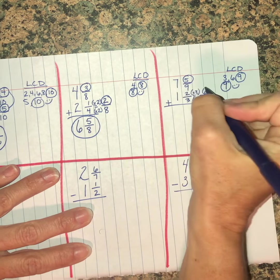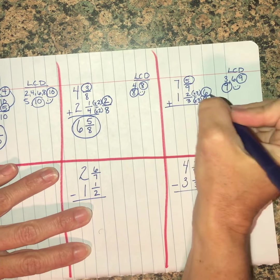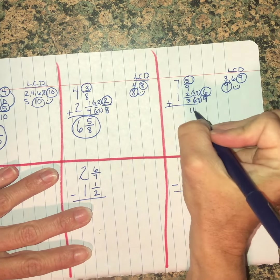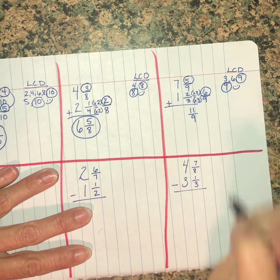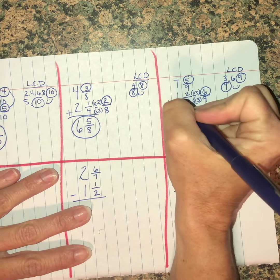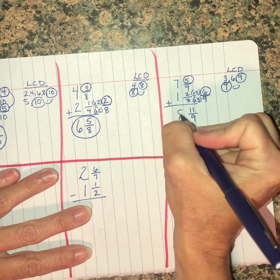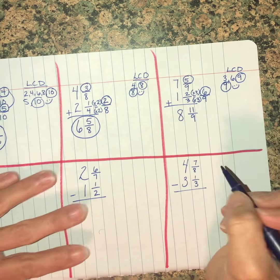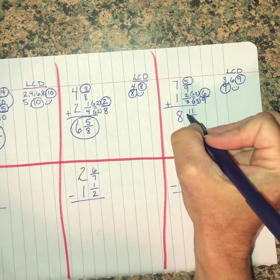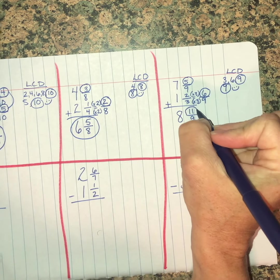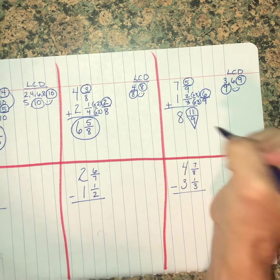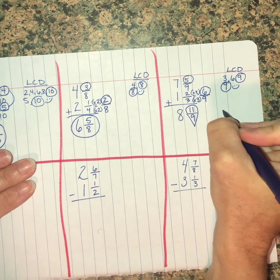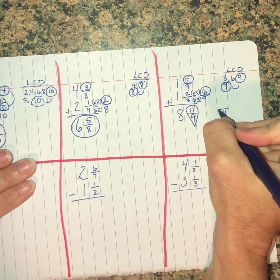Now I'm going to add the numerators only: six and five is eleven-ninths. Seven plus one is eight. Now I have an extra step because this one's improper. Remember, when the big guy's on top, we're going to go out for ice cream. Ice cream makes everything better. So put the ice cream in the freezer and shut the door.